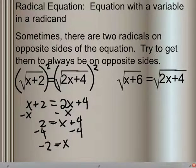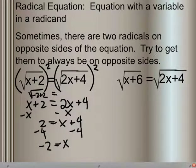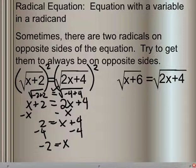We can check: if we plug in negative 2, I would end up with the square root of negative 2 plus 2, getting me 0, equals the square root of 2 times negative 2 — so negative 4 plus 4. Those do work; they each give me 0. You can try it with the right side one. Same process goes.